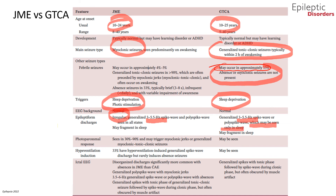The ictal EEG between the two syndromes also differs. In JME, you can see generalized poly spike-wave with myoclonic jerks and 3.5 to 6 Hz generalized spike and wave or poly spike-wave with absence. The ictal EEG for generalized tonic-clonic seizures alone shows generalized spikes during the tonic phase followed by spike and waves during the clonic phase.